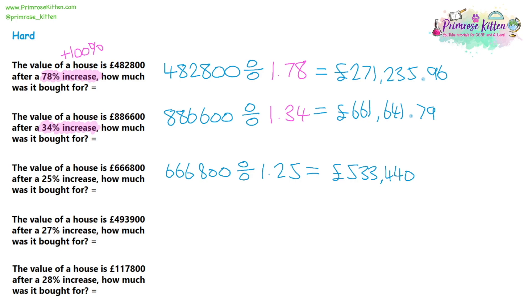Now, question four, and we're getting a bit confident. We can just write the numbers directly into our calculator. So we can do 493,900 divided by 1.27. And that's going to give us, remember the pound sign, 388,897. And then rounding the pence to two decimal places, we're going to have 64 pence. So our final answer is £388,897.64.